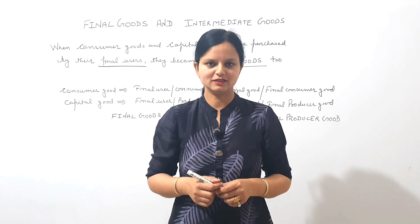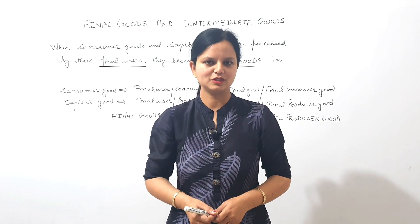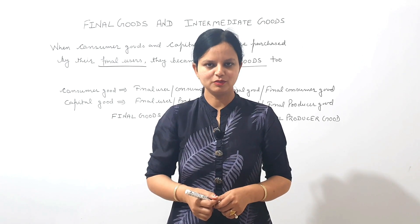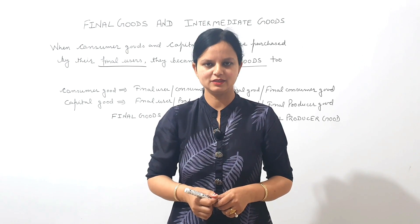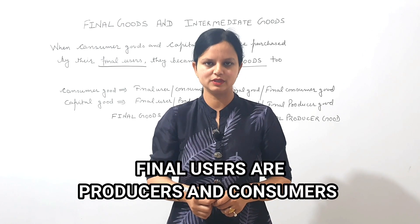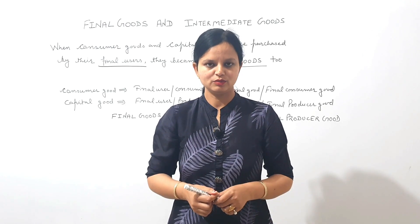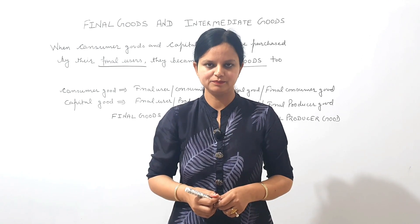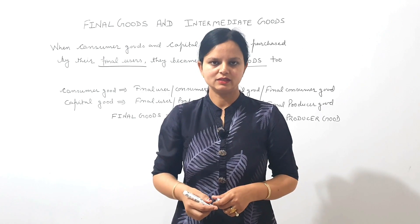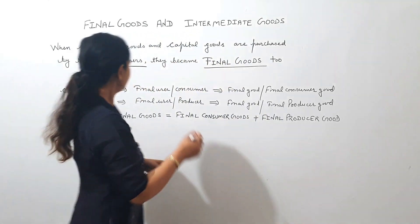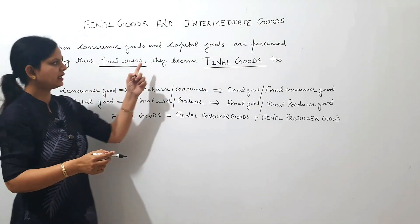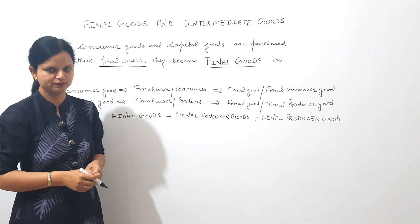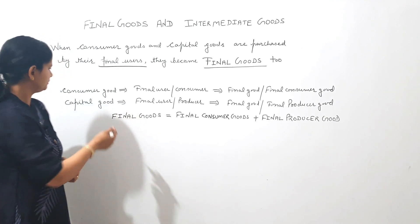In this video I will explain how consumer goods and capital goods become final goods. Consumer goods and capital goods become final goods when these are purchased by their final users. Till consumer goods and capital goods are not purchased by their final users, they remain intermediate goods.